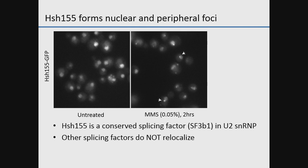HSH-155 is a conserved splicing factor, homologous to SF3B1 in humans, and is a core component of the U2 snRNP — specifically part of a subcomplex called SF3B. It relocalizes, as you can see from the arrows, to foci that are peripheral to the nucleus and more rarely to cytoplasmic foci in response to either MMS or peroxide treatment. Importantly, other splicing factors don't relocalize, suggesting these stresses lead to dissociation of the SF3B complex, allowing HSH-155 to go to these structures.